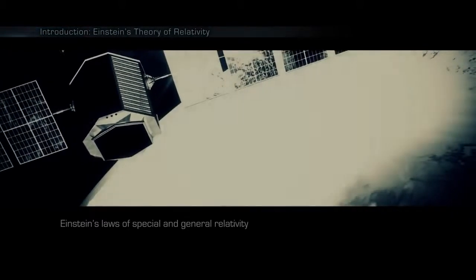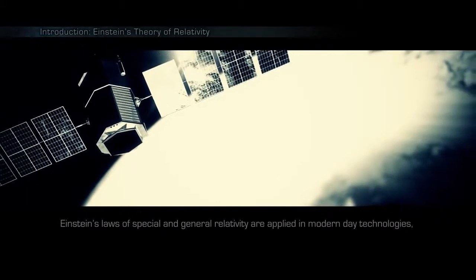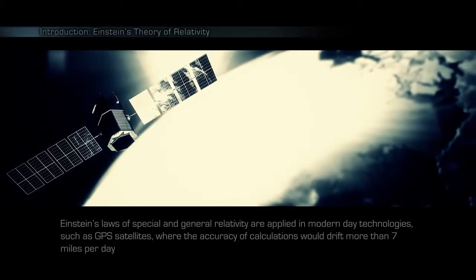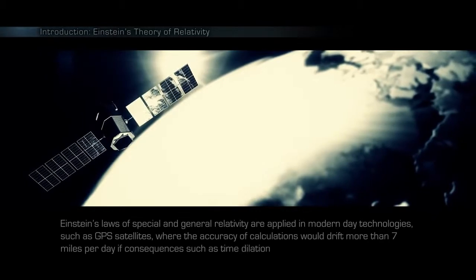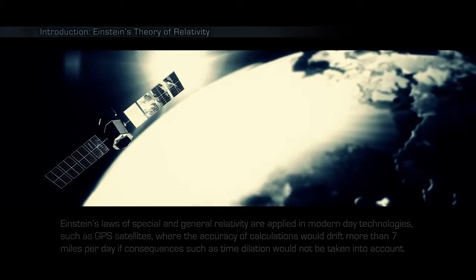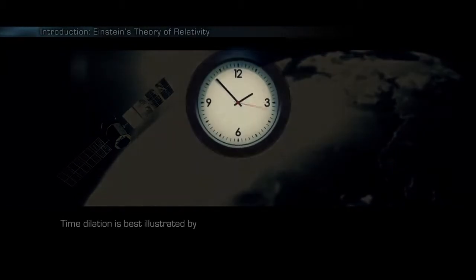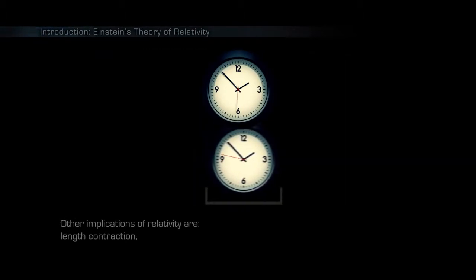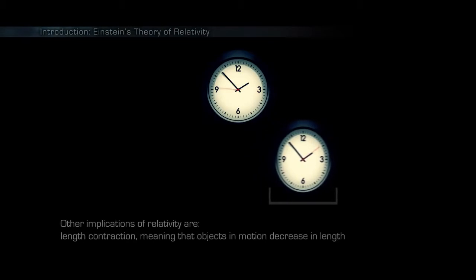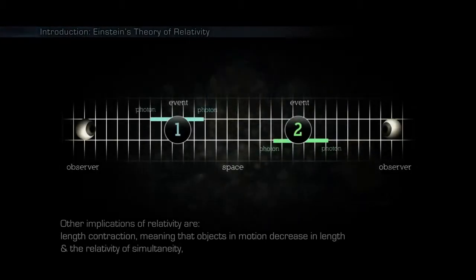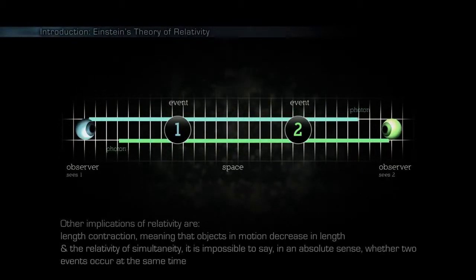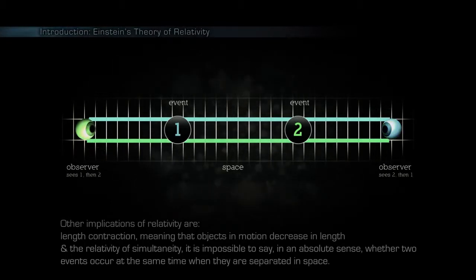Einstein's laws of special and general relativity are applied in modern-day technologies, such as GPS satellites, where the accuracy of calculations would drift more than seven miles a day if consequences such as time dilation would not be taken into account. Time dilation is best illustrated by how moving clocks run slower. Other implications of relativity are length contraction, meaning that objects in motion decrease in length, and the relativity of simultaneity. It is impossible to say in an absolute sense whether two events occur at the same time when they are separated in space.